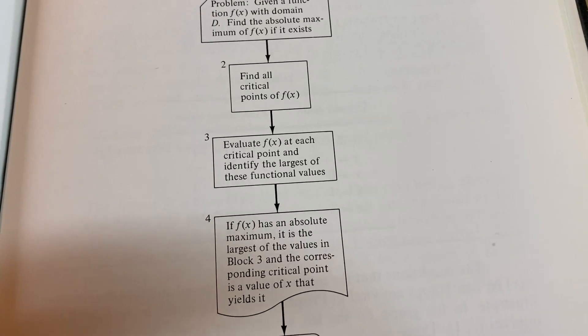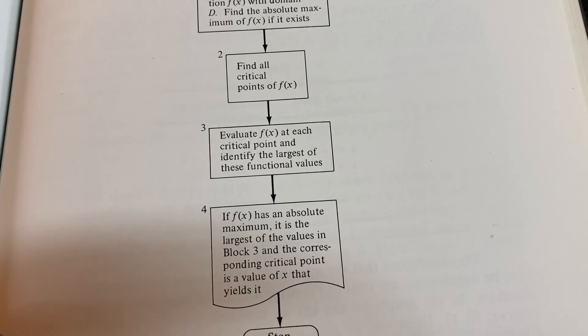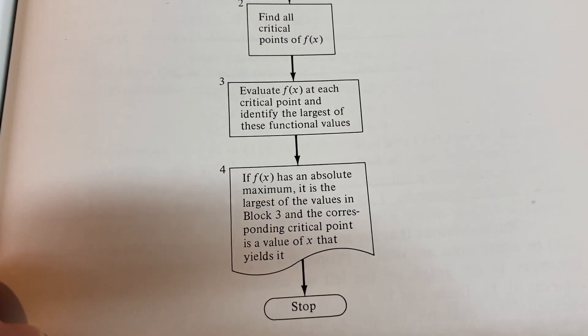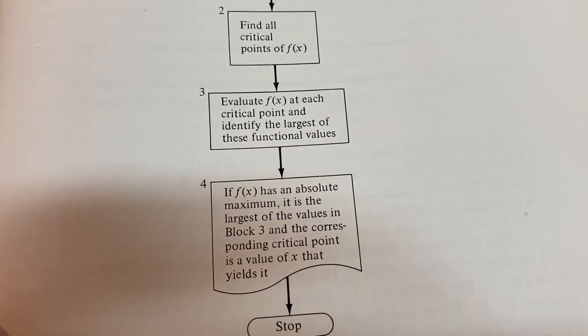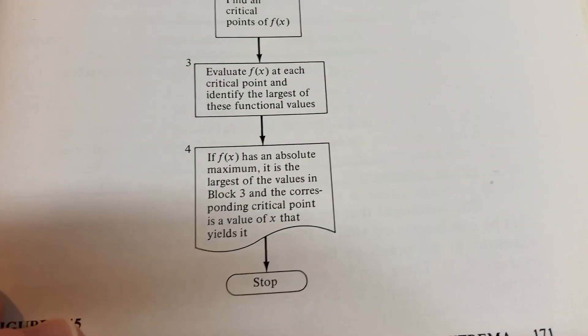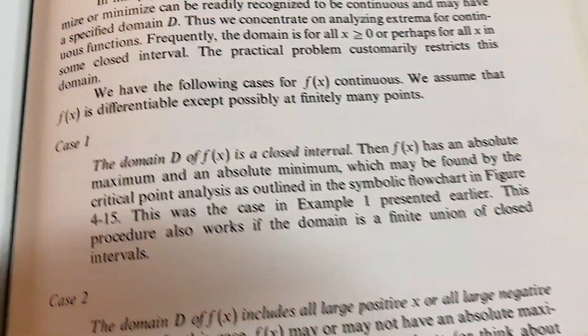Evaluate f of x at each critical point and identify the largest of these functional values. It says if f of x has an absolute maximum, it is the largest of the values in block three. And the corresponding critical point is a value of x that yields it. Stop. So you can do the same thing for the minimum as well.